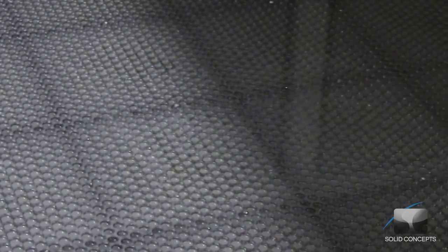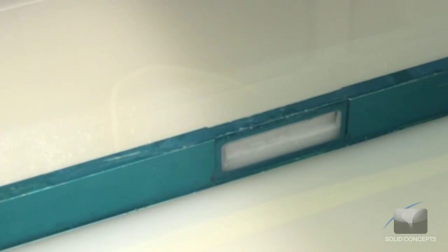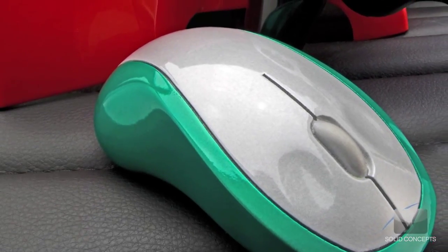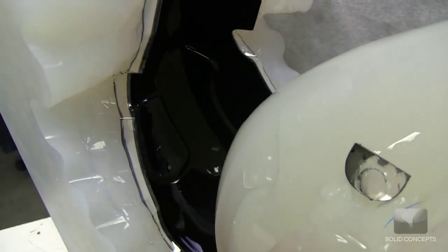Stereolithography is a rapid prototyping process used to create parts from 3D CAD data in a matter of hours. SLA is a highly accurate additive manufacturing process and may also be referred to as rapid prototyping or 3D printing. Models created with this technology are typically used as concept models for form and fit studies or as master patterns for molding techniques.